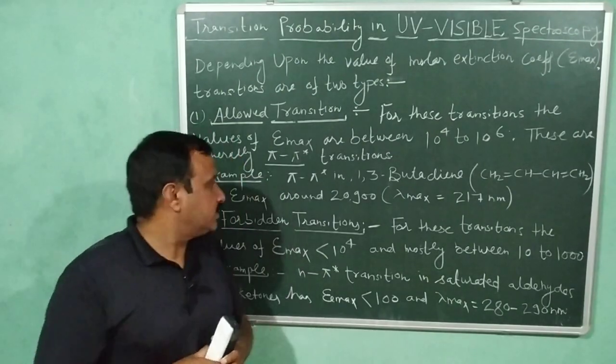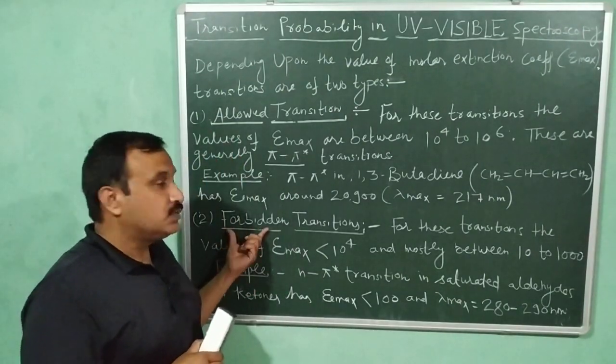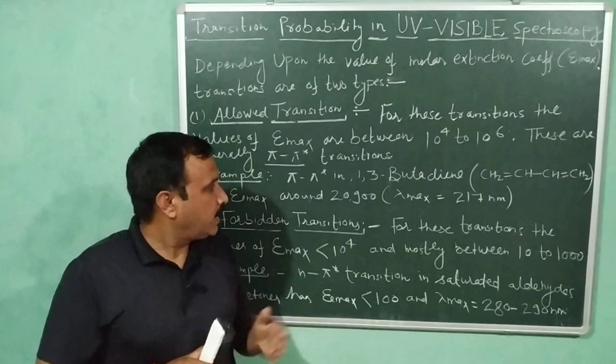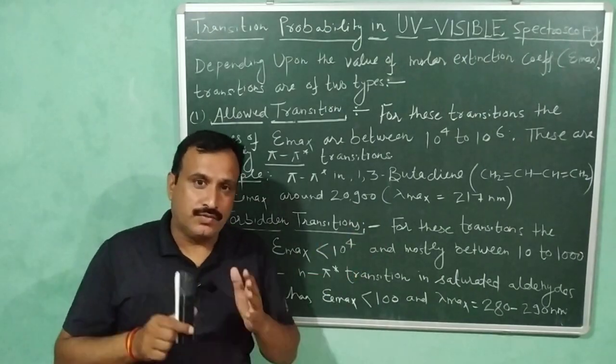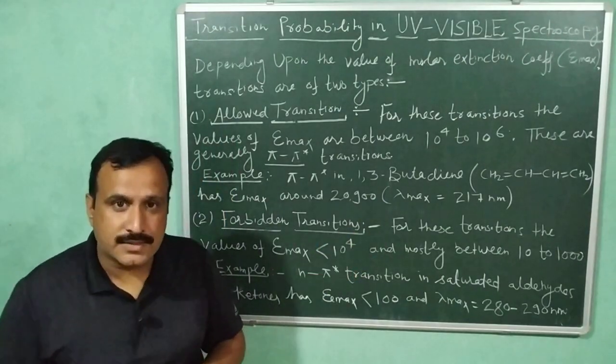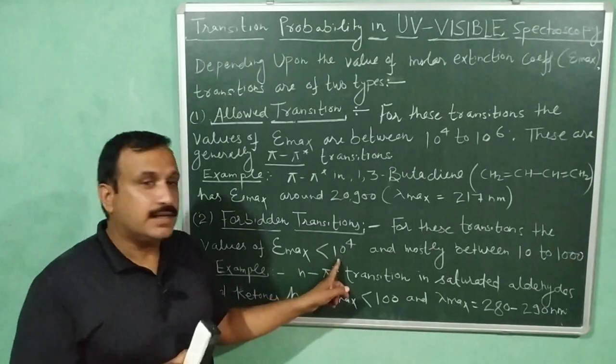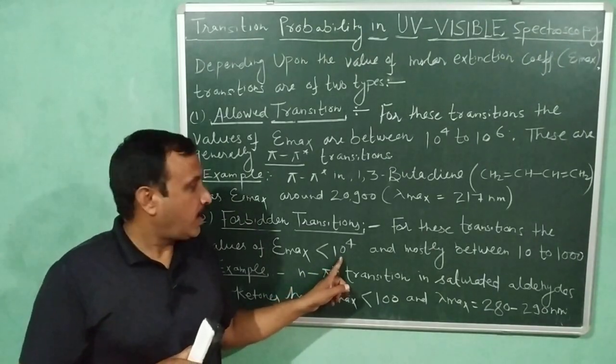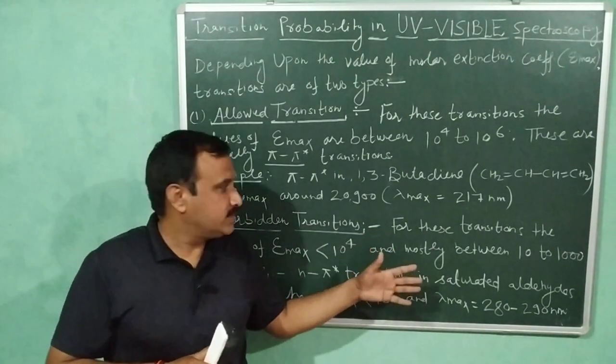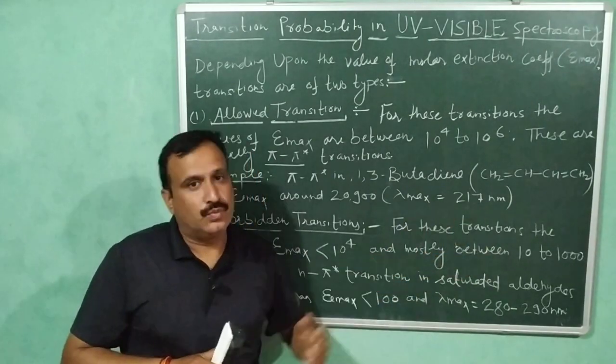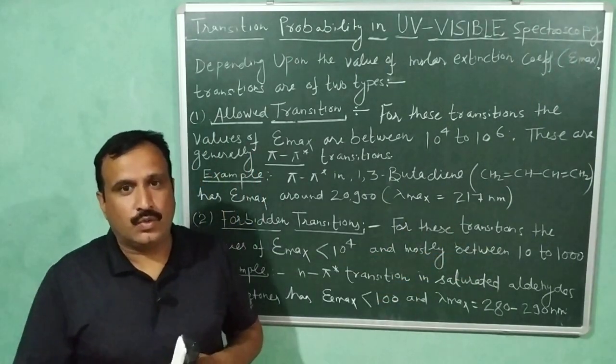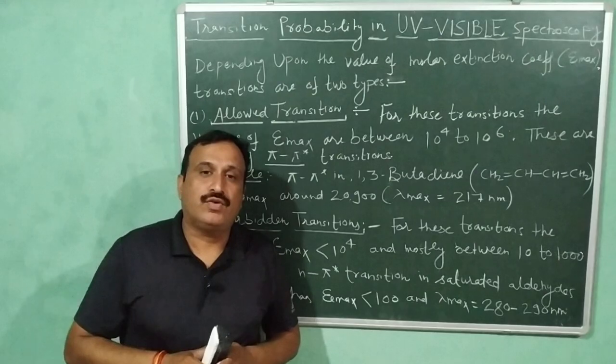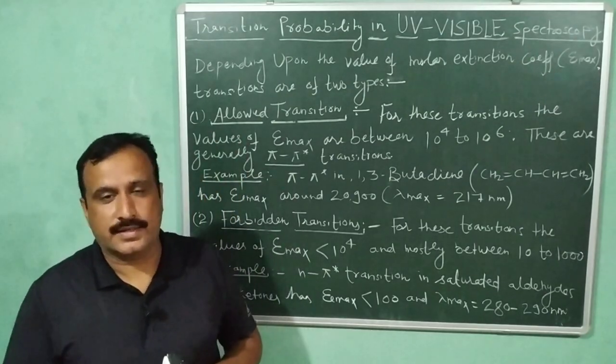Now let us discuss the second one, that is forbidden transitions. For these transitions, the values of molar extinction coefficient is less than 10^4, and it mostly lies between 10 to 1000. These transitions have very low value of molar extinction coefficient.